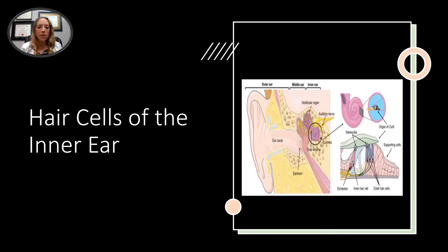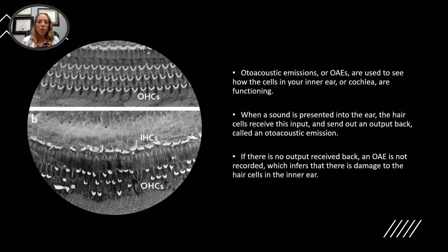The hair cells of the inner ear look like this — there are a lot of different ones, including supporting cells and ones that have a main objective. Essentially, sound goes into the ear, these cells are stimulated, and then they send information to the brain that you're hearing sound. The otoacoustic emissions, or OAEs, are used to see how the cells in your inner ear or cochlea are functioning. When a sound is presented to the ear, the hair cells receive the input and they actually send an output back called otoacoustic emissions. So if there's no output received back, an OAE is not recorded, which infers that there is damage to the hair cells in the inner ear.